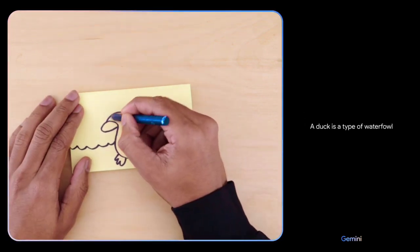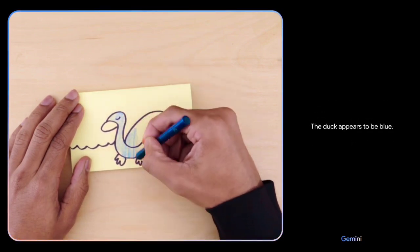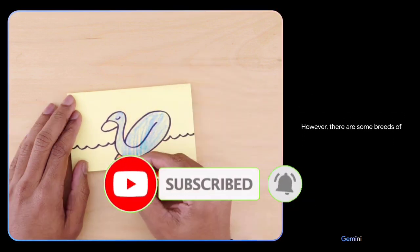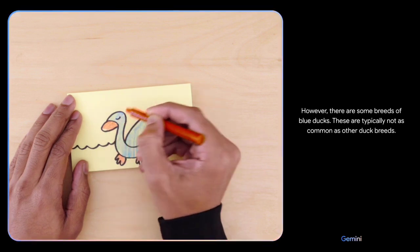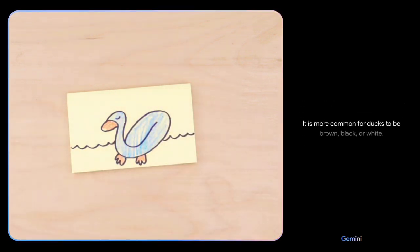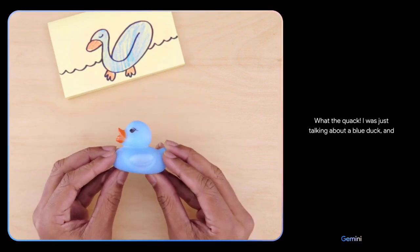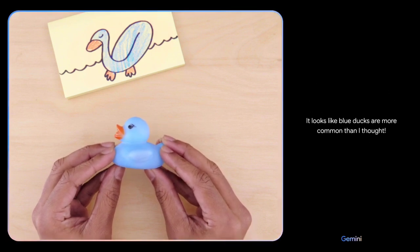A duck is a type of waterfowl in the family Anatidae. Ducks are closely related to geese and swans. The duck appears to be blue. This is not a common color for ducks. However, there are some breeds of blue ducks. These are typically not as common as other duck breeds. It is more common for ducks to be brown, black or white. Are you sure? What the quack? I was just talking about a blue duck and now you're holding one. It looks like blue ducks are more common than I thought.